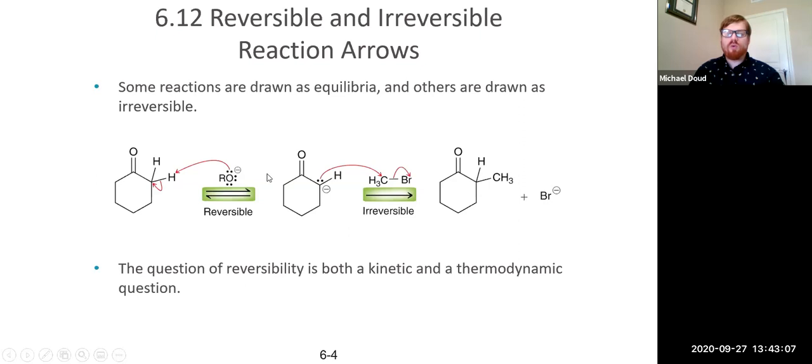In other words, you can deprotonate this, or this can get its proton back from the alcohol. So we have to write a reversible arrow here. On the other hand, if we have this carbanion here, and this carbanion acts as a nucleophile onto this electrophilic carbon, you form a new carbon-carbon bond, that's an irreversible step.